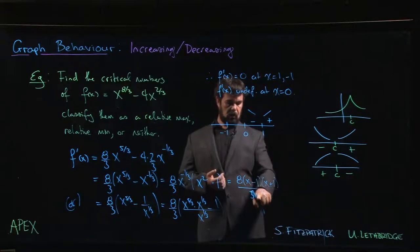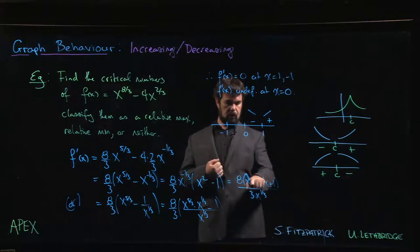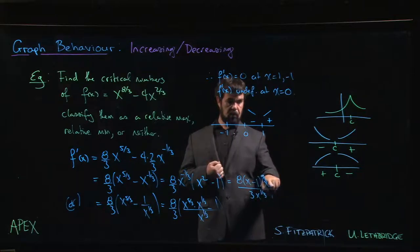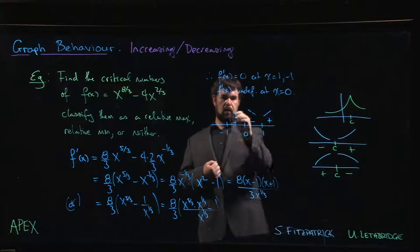Between minus 1 and 0, the cube root of a negative is defined and it's negative. So if we're in this region here: negative, negative, but this is still positive. Two negatives make a positive, so we're increasing.